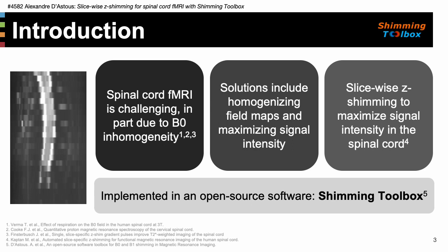Spinal cord fMRI is challenging for many reasons, including its small size and its proximity to moving organs. It also suffers from poor B0 shimming due to field inhomogeneities caused by its proximity to the lungs, as well as smaller scale variations due to connective tissue and vertebrae interfaces.